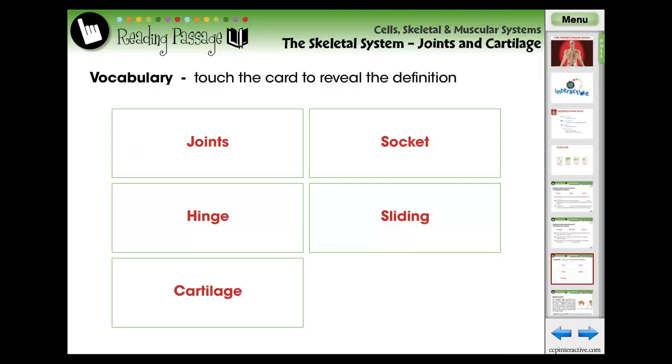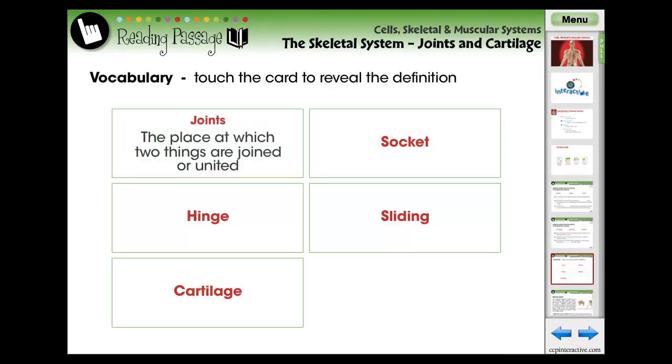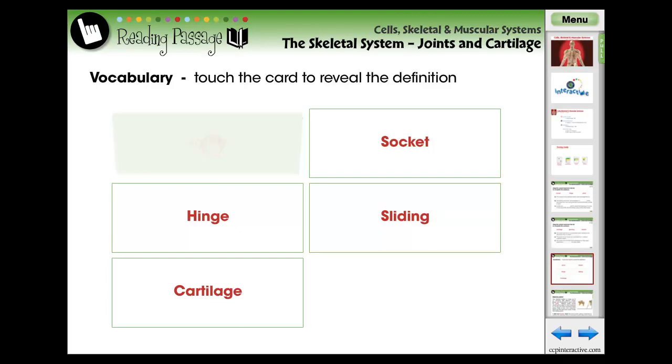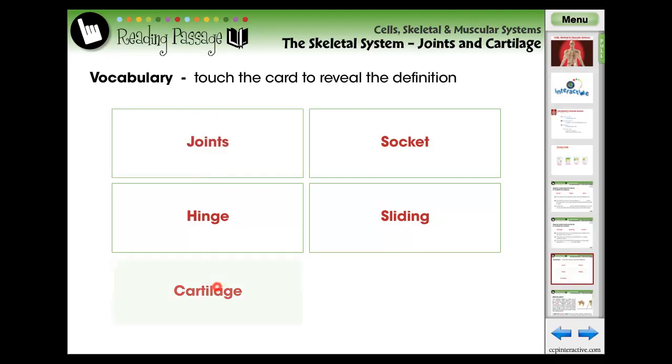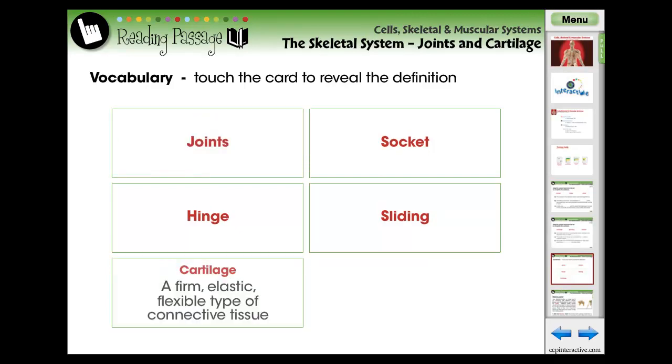Using vocabulary flashcards, we identify five terms that each student should comprehend prior to reading the following reading passage. Touch the card to reveal a simplified definition.